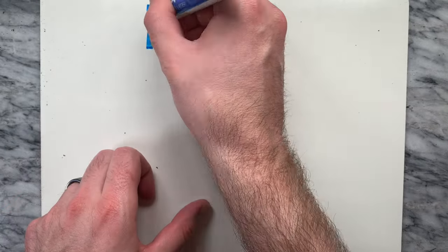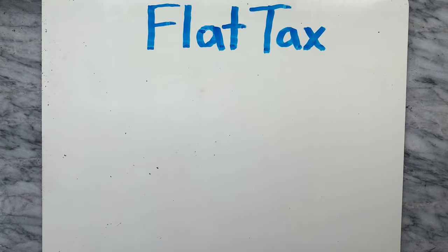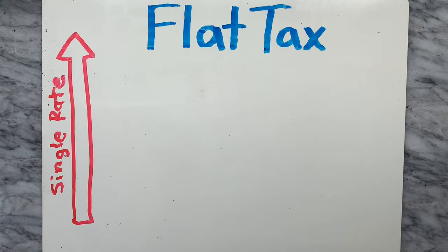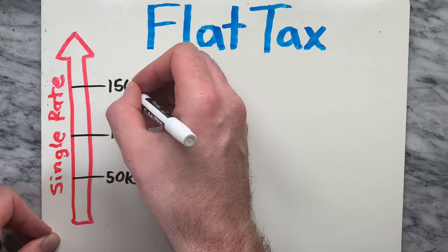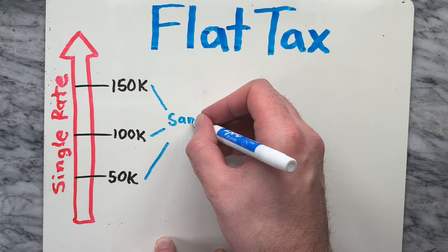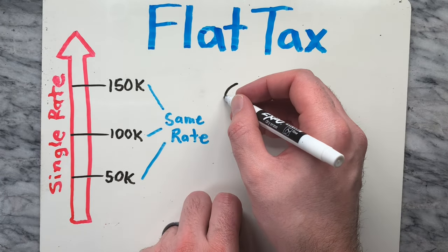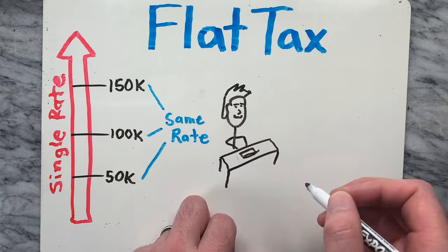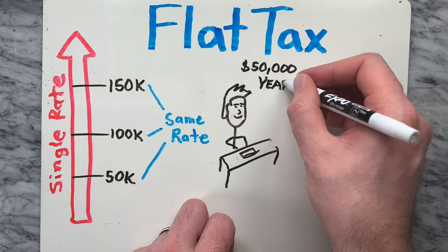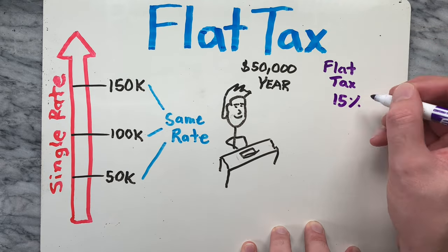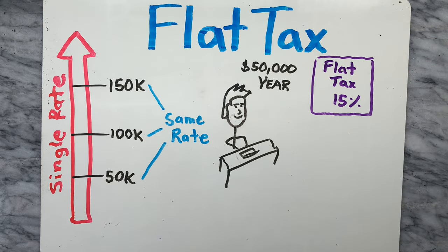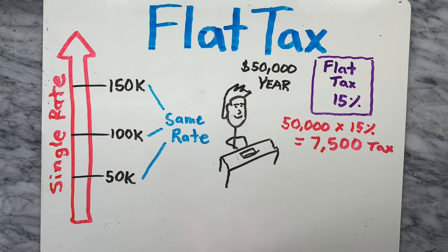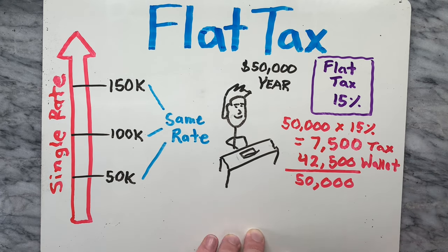Now let's take a look at flat taxes. A flat tax refers to a tax system where a single tax rate is applied to all levels of income. This means that individuals with a low income are taxed at the same rate as individuals with a high income. Let's go back to our example with Taylor, who earns $50,000 a year, and this time we will use a flat tax instead of a progressive tax. If the flat tax is 15%, then 15% of the entire $50,000 is $7,500.